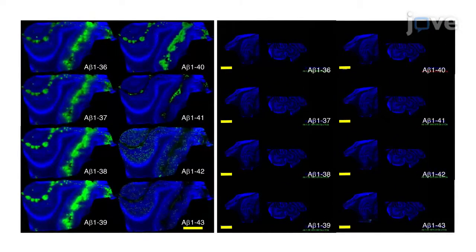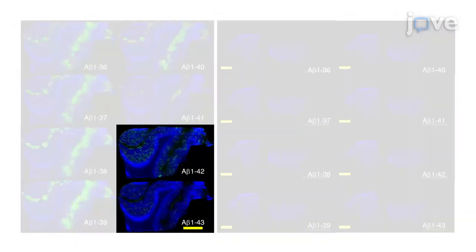The cerebral amyloid angiopathy or CAA phenotypes of patient number 3 were most prominent in this study. MALDI IMS of this patient's brain tissue clearly visualized that amyloid beta 1 to 42 and amyloid beta 1 to 43 were preferentially deposited as senile plaques in the cerebral parenchyma.